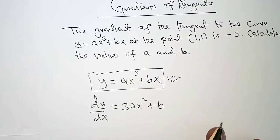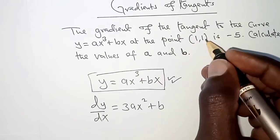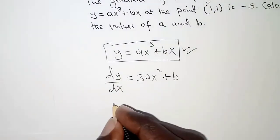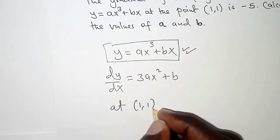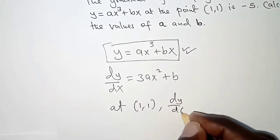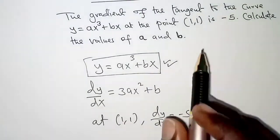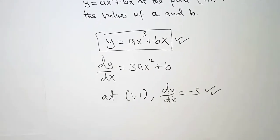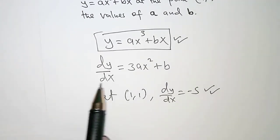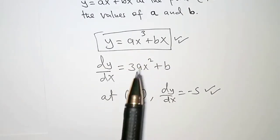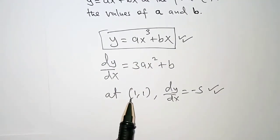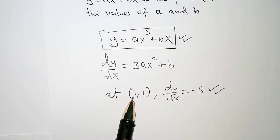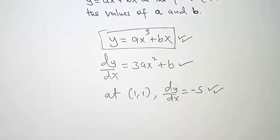This gradient function represents the gradient of the curve at any point along the curve. We have identified a specific point, that is point 1 comma 1. So at 1 comma 1, the gradient — dy over dx — is negative 5, as given. We are going to use this information to determine the values of a and b. The point helps us because we know the value of x.